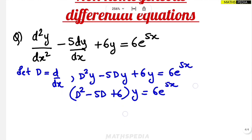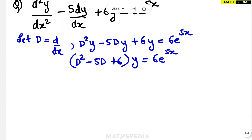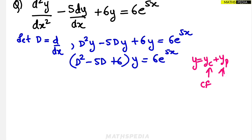To find the solution, we use y = yc + yp, where yc is the complementary function and yp is the particular integral. We must find yc first, then yp, because there is a function on the RHS. Both values are then added to get the complete answer.